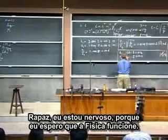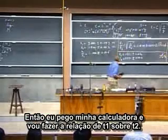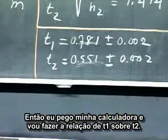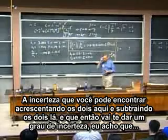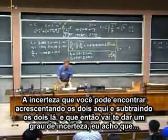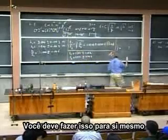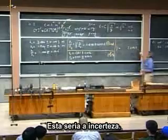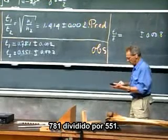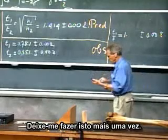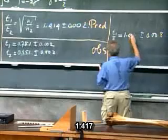I'm nervous because I hope that physics works. So I take my calculator, and I'm now going to take the ratio T1 over T2. The uncertainty you can find by adding the two here and subtracting the two there, and that will give you an uncertainty of point-oh-oh-eight — a dimensionless number. The observation: seven-eight-one divided by five-five-one equals one point four one seven.